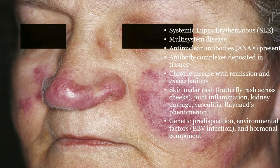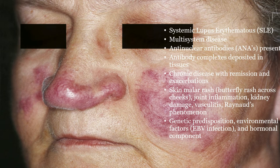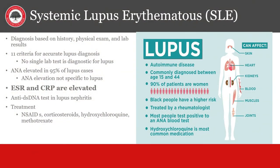Systemic lupus erythematosus or SLE is an autoimmune disease mostly affecting women and can involve multiple organ systems. It can present with the classic malar or butterfly rash. It frequently has a positive ANA, but this is not diagnostic, as many other autoimmune diseases can also have a positive ANA. It can cause Raynaud's phenomenon and runs heavily in families. Diagnosis is by history, physical, and labs with 11 criteria. Those with nephritis may have positive anti-double-stranded DNA tests. Treatment includes NSAIDs, corticosteroids, anti-malarial drugs like hydroxychloroquine, and methotrexate, with hydroxychloroquine being the most important.